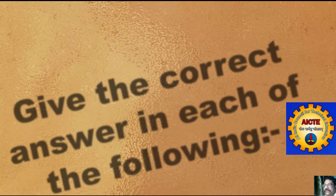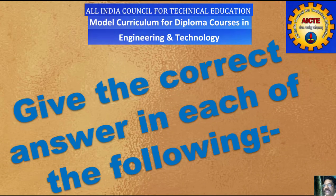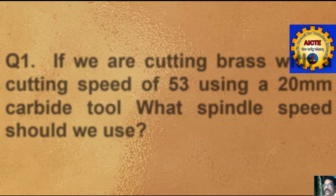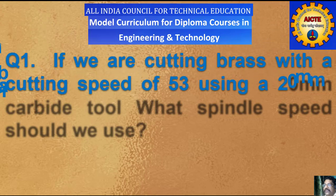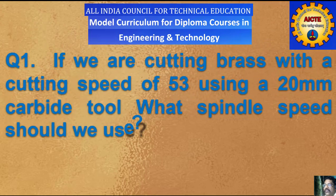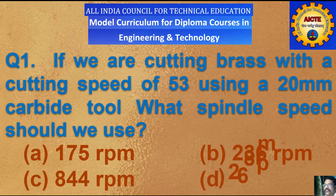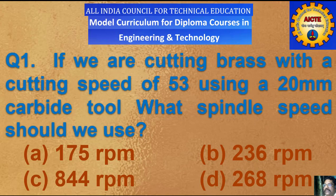Objective questions — give the correct answer in each of the following. Question number 1: if we are cutting brass with a cutting speed of 53 m/min using a 20 mm carbide tool, what spindle speed should be used? A) 175 rpm, B) 236 rpm, C) 844 rpm, D) 268 rpm.